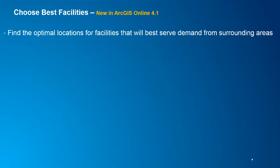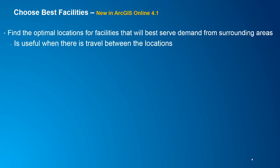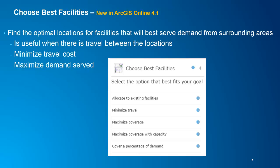As you can see from the examples, we apply the tool Choose Best Facilities when there is travel between the locations. The tool allows us to find the best locations as the one that minimizes the overall travel time or travel distance while maximizing the amount of demand being served. Choose Best Facilities allows you to specify the type of problem you are solving, which we call the goal. The tool is optimized to provide a solution to the particular goal that you choose.